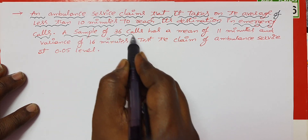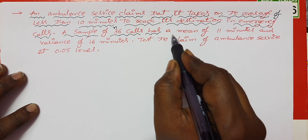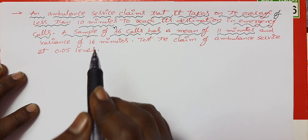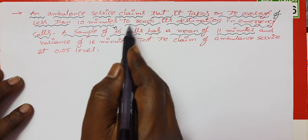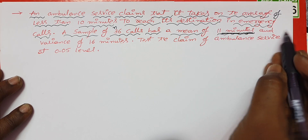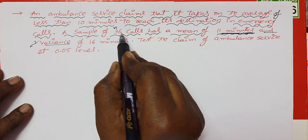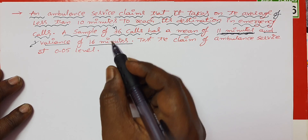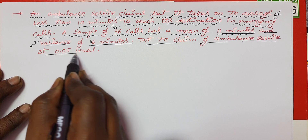A sample of 36 calls is taken, with a mean of 11 minutes. The variance is 1.6 — not 16, it is 1.6. Test the claim of the ambulance service at the 0.05 level.